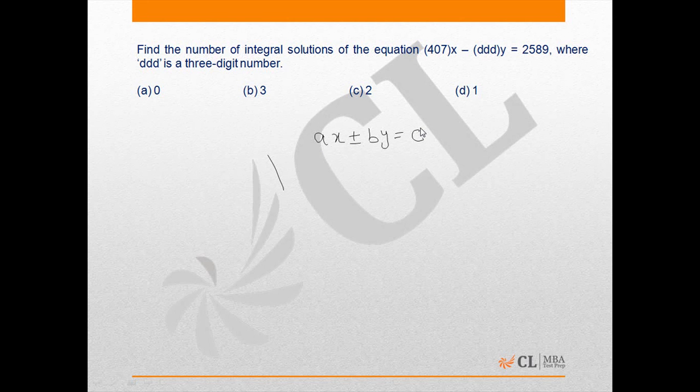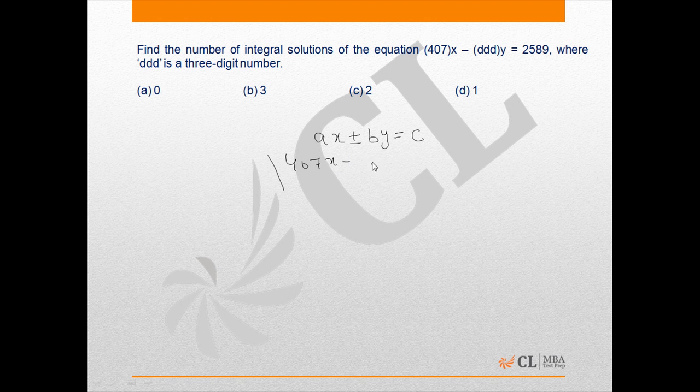So here we have the equation in the format 407X minus DTDY equals 2589. We understand it's a three-digit number.